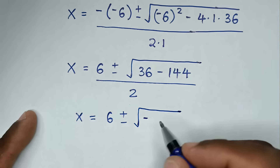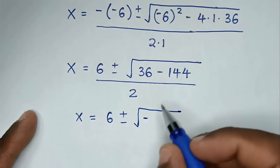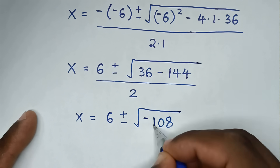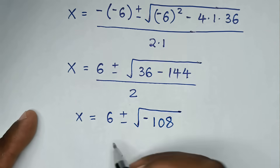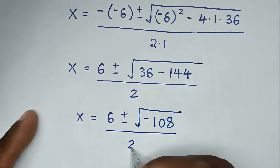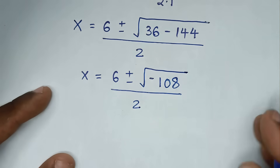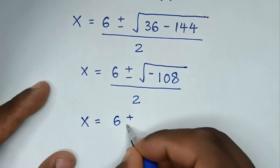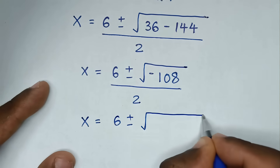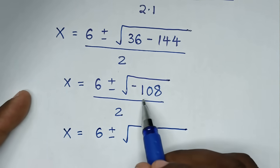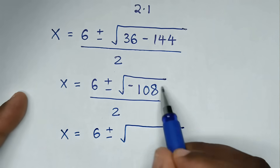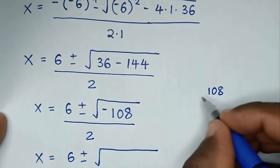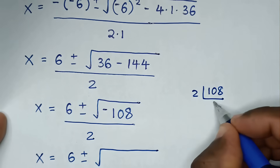So 36 minus 144 gives us negative 108 under the square root. In the next step, x is equal to 6 plus or minus square root of negative 108. Let's find the factors of 108: 108 divided by 2 is 54.